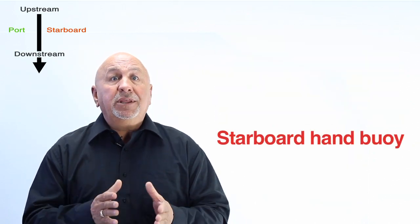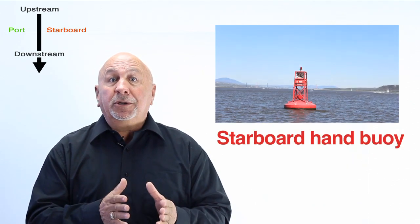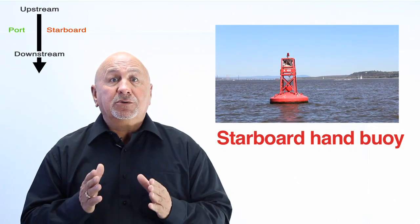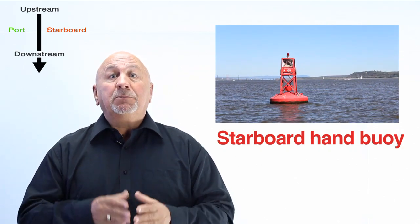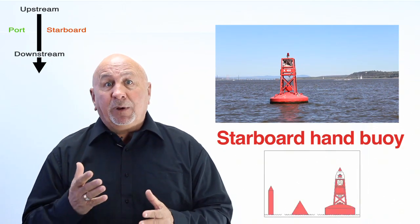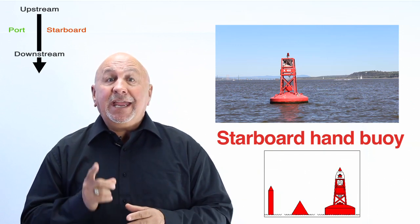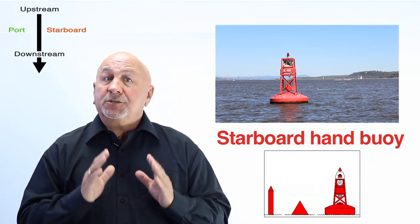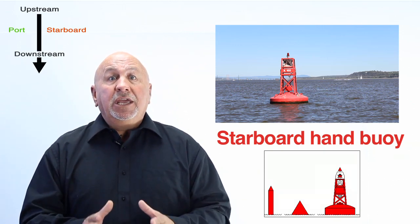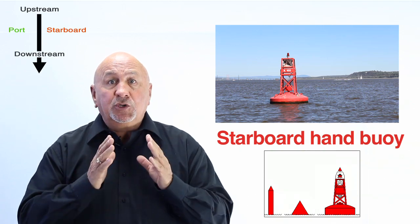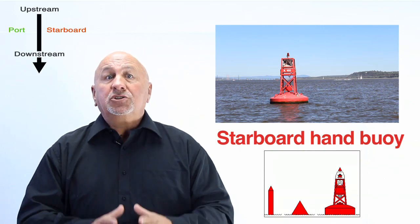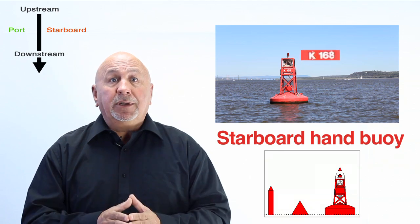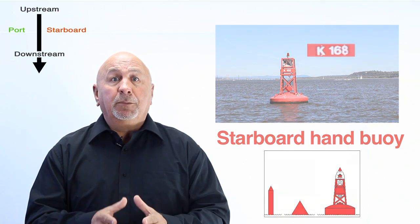Starboard hand buoys. A starboard hand buoy marks the starboard or right side of the channel, or where danger is present. It must be kept on the starboard or right side of the pleasure craft when heading upstream. It is painted red. If the buoy has a light, that light is red, the top is cone-shaped, and if numbered, it bears an even number.